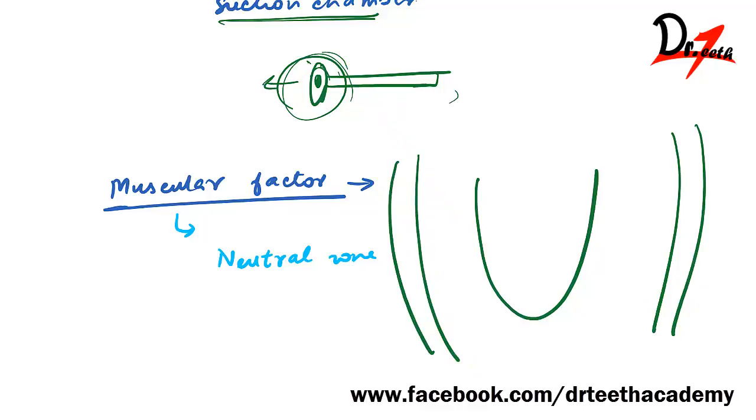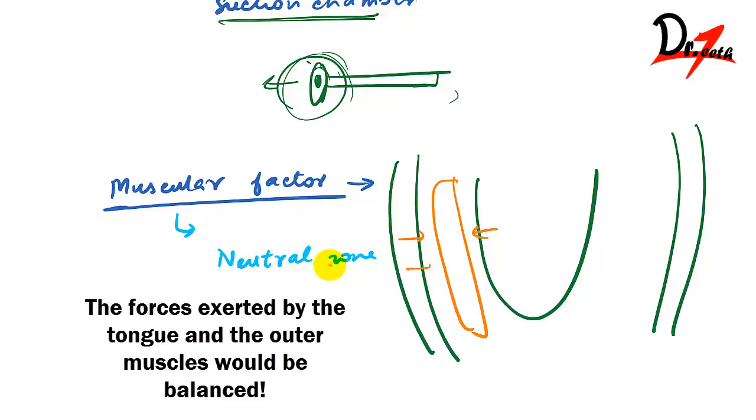We have the tongue here and the outer mucosa here, with the teeth in between. We have forces acting from this side and that side. If we keep our teeth in the neutral zone, it will help us get retention.